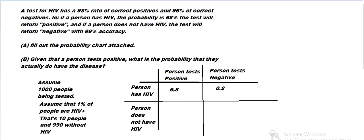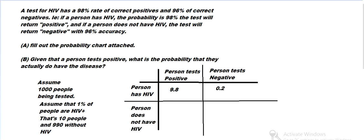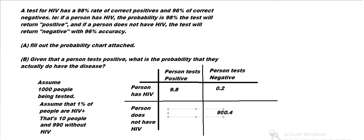The probability that a person tests negative if they do not have HIV is 96%, so you can pop that in the calculator: 0.96 times 990 is 950.4. That's the people who do not have HIV and test negative, so we've got to make sure we've got it in the right place. And then the rest of the 990 — that's 39.6 — test positive, so that's going to be the false positive, i.e. they do not have HIV but they test positive.